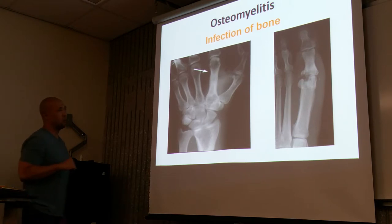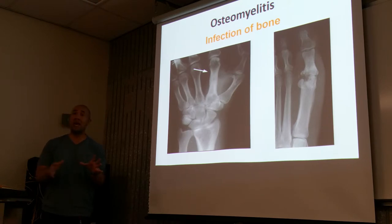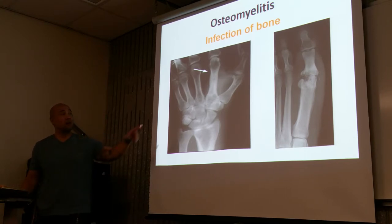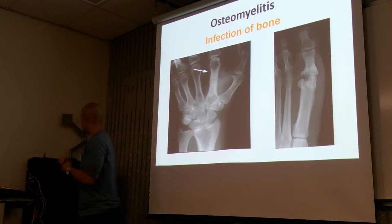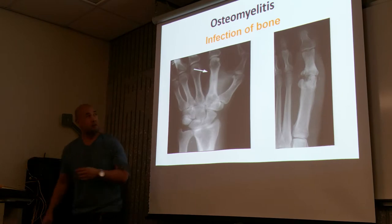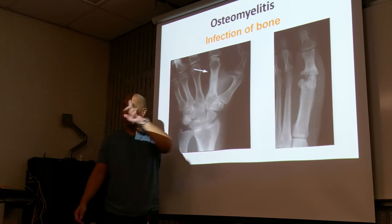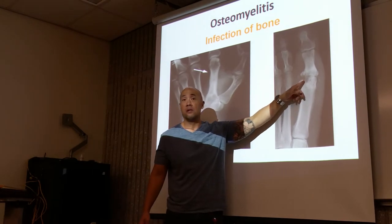Osteomyelitis is the infection of the bone. It's usually secondary to some kind of injury to the bone or some kind of surgery. If someone had surgery on their hand and the surgical area got contaminated, they can get an infection of the bone. You'll notice changes in the loss of bone — extra bony buildup caused by infection, and in some areas a loss of bone. It can go either way.